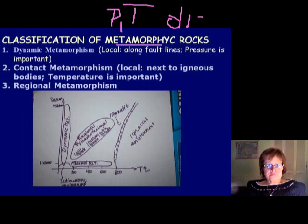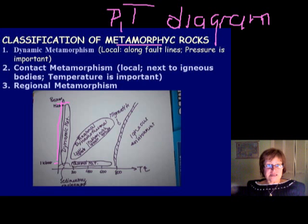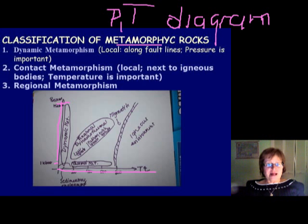On this PT diagram, the vertical axis has pressure in kilobars — an SI unit — from 1 to 15. 15 kilobars is pretty high. The temperature axis goes in Celsius from 0 to 800. Remember, 800°C is when the rock starts to melt, and the higher the pressure, the higher the melting temperature, so the melting curve goes this way.